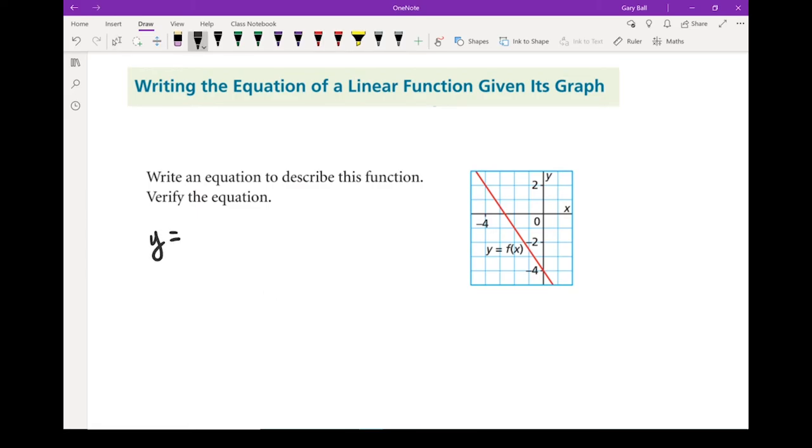Remember, y equals mx plus b. It's a good idea to get into the habit of writing that down every time you start a question. It just ingrains it in your memory. So we are going to start with the starting point, and that's where it crosses the y-axis, and that's this point right here at minus 4. So I'm going to write that down. b equals minus 4.